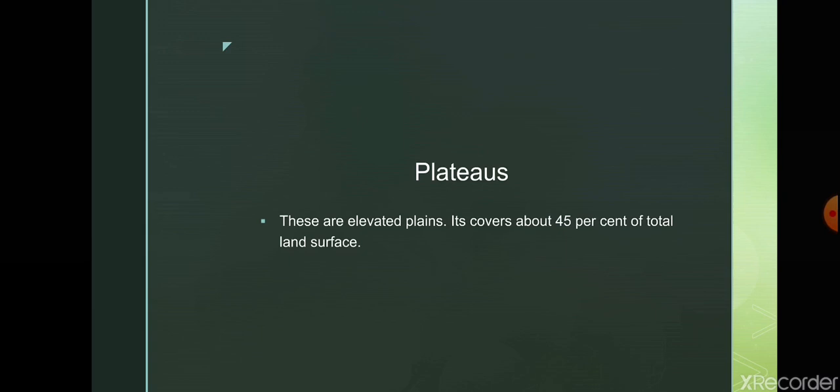Some of the soils on these plateaus are suitable for the cultivation of crops like wheat, barley, soya bean and cotton. For example, the black cotton soil of the Deccan plateau is excellent for the cultivation of cotton.